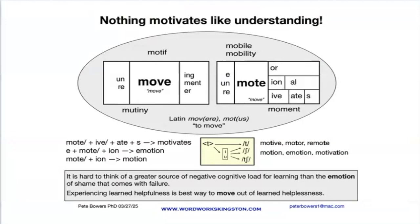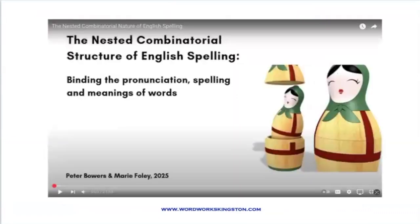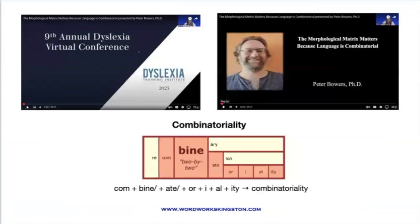When I first shared the statement 'nothing motivates like understanding' with my mentor, the Real Spelling author, he commented, 'And of course you see the paradox.' I had not at first, but I did once I investigated these words and the history and structure of 'understand' as well — see what you think. Finally, if you are interested in more along this line of inquiry, see the description of this video for a link to a 20-minute video on the universal combinatorial structure of language as it's realized in English orthography and how this structure is reflected by the word sum and matrix. You will also find a link to my talk, 'The Morphological Matrix Matters Because Language is Combinatorial,' for the 9th Annual Dyslexia Virtual Conference with the Dyslexia Training Institute. This is the companion video for the first video with Marie Foley — a 60-minute video that goes into much more detail. Thanks.